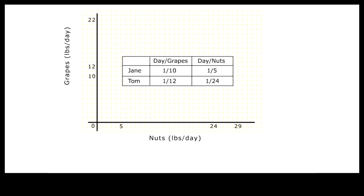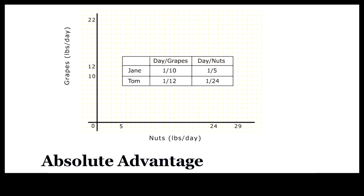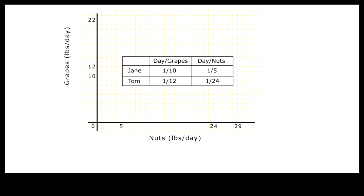It shows that Tom takes less time to produce both goods than Jane. We can say Tom has an absolute advantage in producing both goods. It seems that Tom would not benefit from pooling resources with Jane.